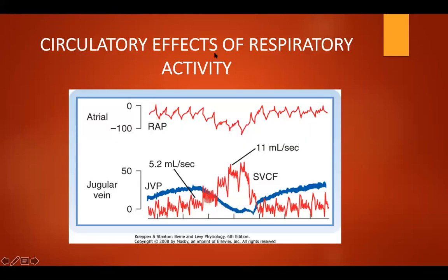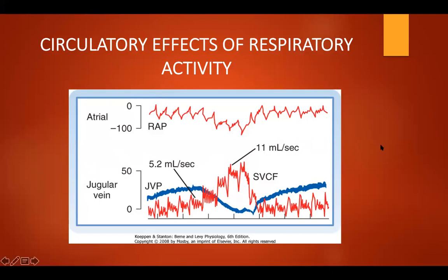The circulatory effects of the respiratory system: during normal inspiration, the intrathoracic and right atrial pressure and the jugular venous pressure decrease, and flow in the superior vena cava increases — from 5.2 it becomes 11. All pressures are in millimeter mercury. The femoral arterial pressure did not change substantially during normal inspiration, and the femoral artery is not affected by respiratory activity.